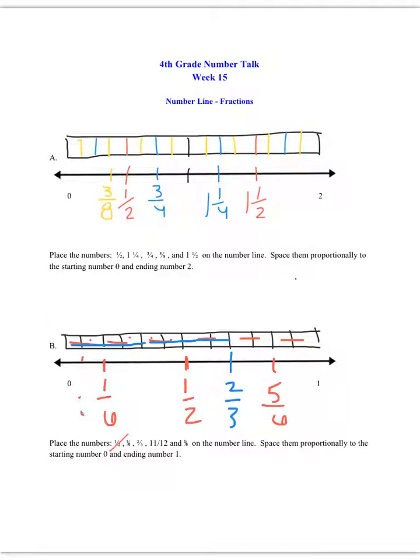2 thirds falls right there. Or it falls at, like we said, 8 twelves, okay? Then we still haven't found 11 twelves. Well, there's 12 total unit bars here. So there's 11 twelves.